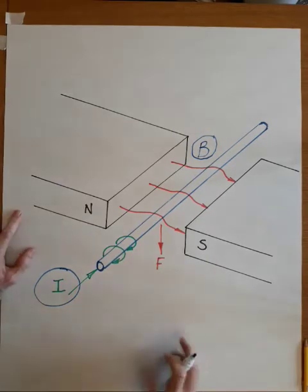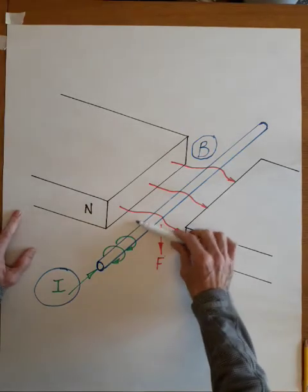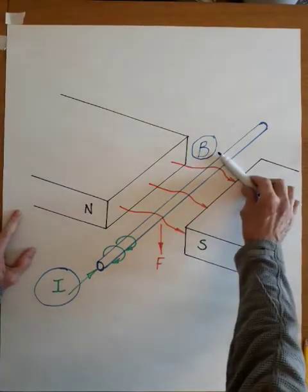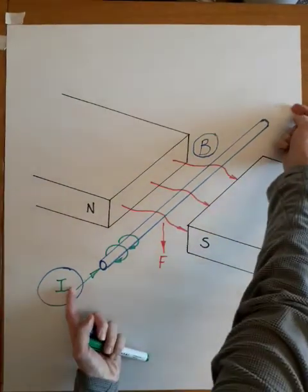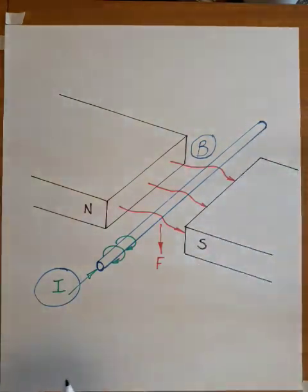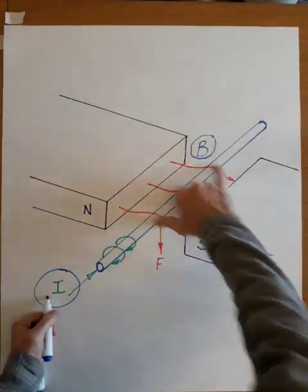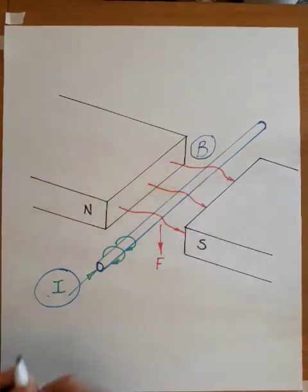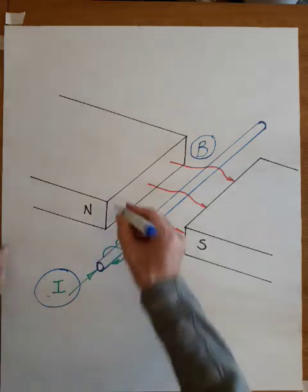And the third factor is what is the length of the conductor in the magnetic field. So if this piece of conductor, this piece of wire was 10 metres long, but only one metre of it fell within this pole area, then it's the one metre that we would use. So it is this length.